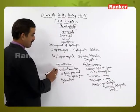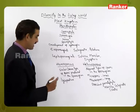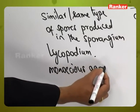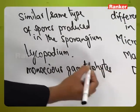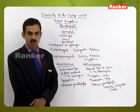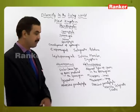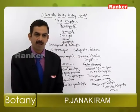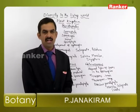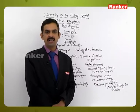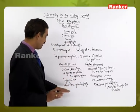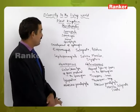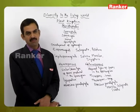When homosporous condition is present, monoecious gametophytes are produced. Monoecious gametophytes bear both the sex organs — both male and female sex organs are present on the same gametophytic plant. Dioecious means the male gametophyte and female gametophyte are separate: the male gametophyte contains the male sex organ called antheridium, whereas the female gametophyte contains the female sex organ called archegonium. This variation is seen in gametophytes depending on whether they arise from homosporous or heterosporous conditions.